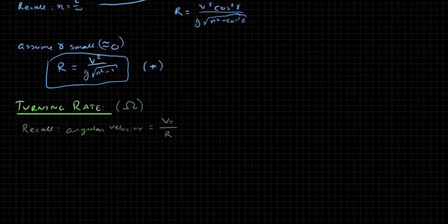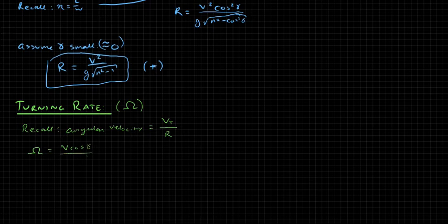We know the tangential velocity, so let's go back up to our figure. Tangential velocity is V cos gamma, and we have R there. So let's write this out. In that case, omega is going to be V cos gamma divided by R.